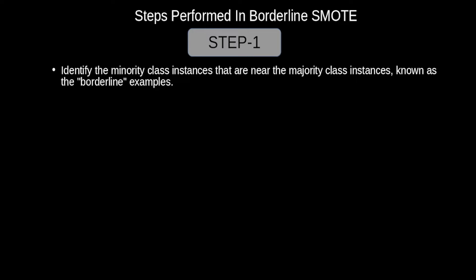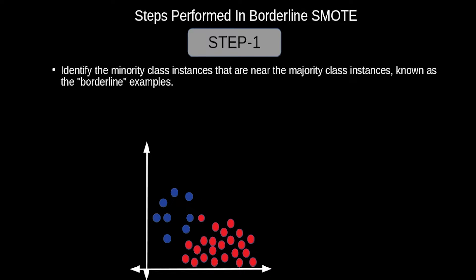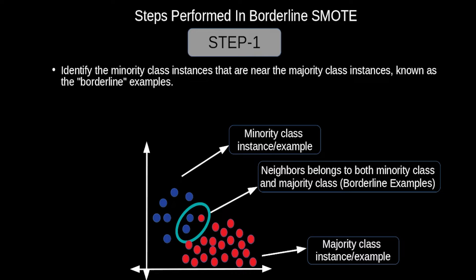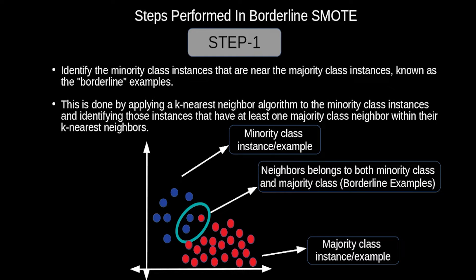In step 1 of Borderline SMOTE, we identify minority class instances that are near majority class instances — also known as borderline examples. In a dataset where blue samples are minority and red are majority, borderline examples have neighbors belonging to both classes. This is done by applying k-nearest neighbor to minority instances and identifying those with at least one majority class neighbor within their k-nearest neighbors.